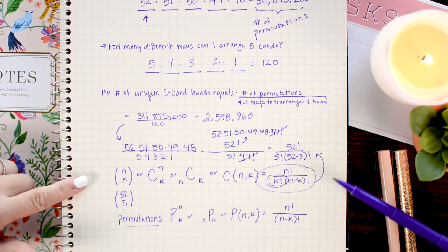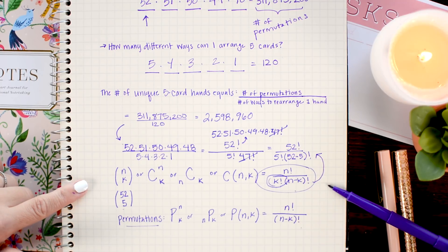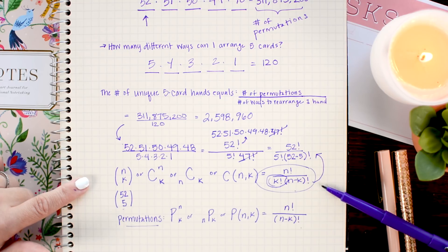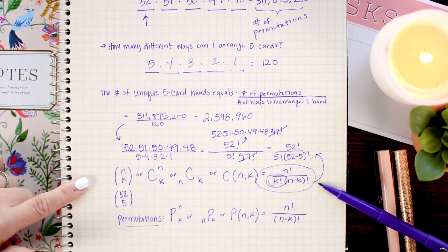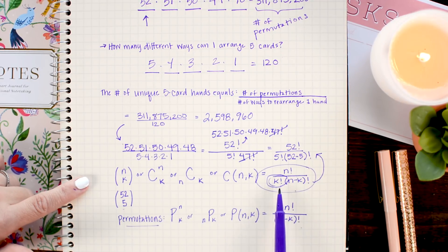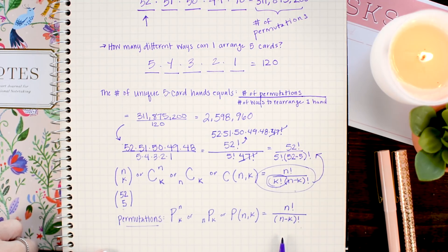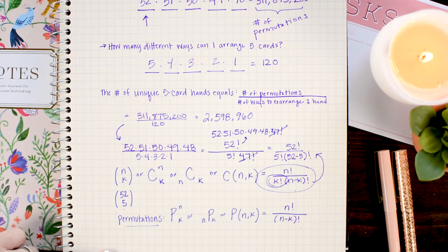To summarize, the difference between combinations and permutations is that in combinations, we don't care about the order of our items. That means that we are going to divide out all of the extra arrangements that are the same combination. And that's why we have this extra K factorial in the denominator. In permutations, we want all of the possible arrangements in every order. And so, in this formula, we don't need to divide out the extra arrangements.